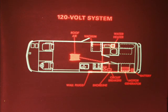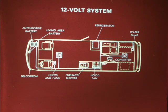The 120 volt alternating current powers the plug receptacles, the water heater, and the roof-mounted air conditioner. 12 volt direct current powers the remaining living area components and the automotive and chassis electrical system.